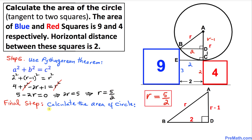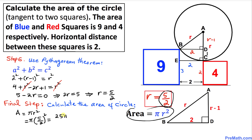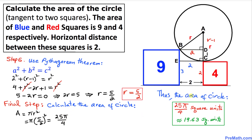Here is our final step: calculating the area of the circle using the formula A = πr². With r = 5/2, we get A = π × (5/2)² = 25π/4. Thus the area of the circle is 25π/4 square units, which is approximately equal to 19.63 square units. And that's our answer.